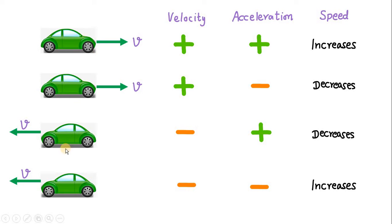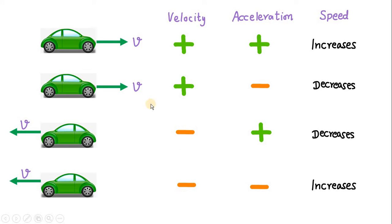Look at these four figures. In the first two figures, the velocity of the car is in the rightward direction. You can assume the rightward direction as positive, so the velocity in the first two cases is positive. We can assume the leftward direction as negative, so the velocity of the car in the last two figures is negative — plus, plus, minus, minus are the signs of velocities.